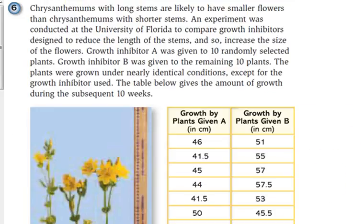Let's look at some chrysanthemums that they used two different growth inhibitors. And what they're doing is the growth inhibitors - an inhibitor actually means that it's preventing growth. It's supposed to reduce the length of the stems because it says chrysanthemums with long stems are likely to have smaller flowers. If it has a shorter stem, it's going to have a larger flower. Well, who wants a long stem? Flowers are meant for their actual flowers. So, they are comparing these two growth inhibitors.